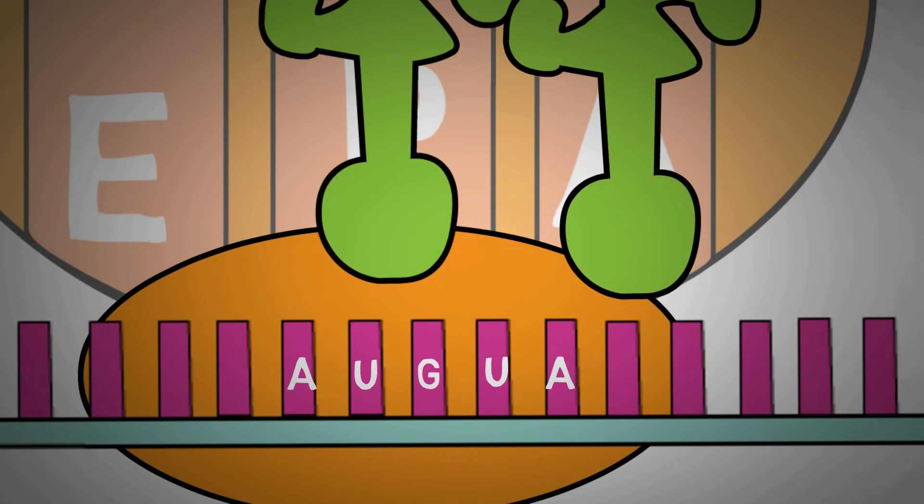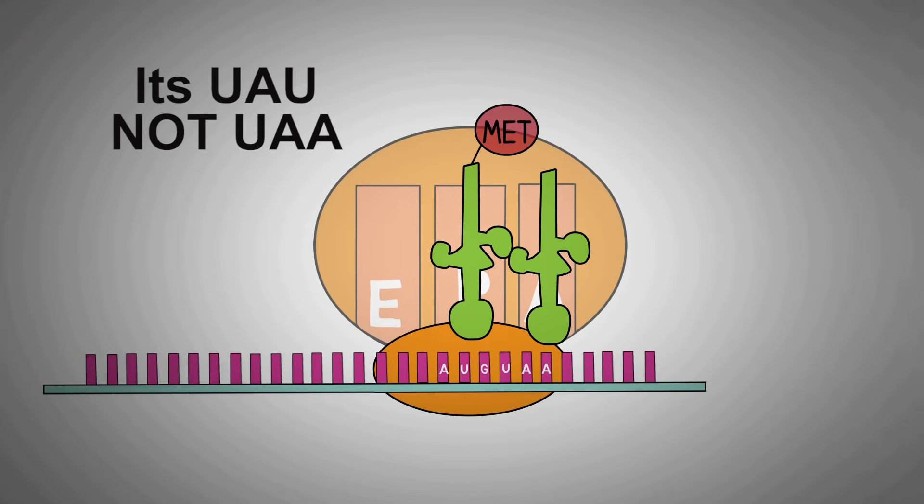Now, if the next codon is UAU, the tRNA attached to the A site will have amino acid tyrosine. So, this tRNA is now occupying the A site. Now, we know the main job of translation is to form a protein which is essentially a chain of amino acids.